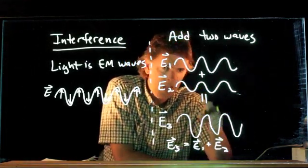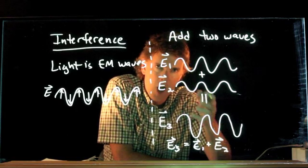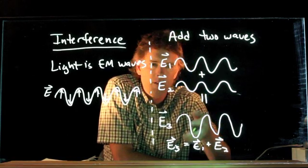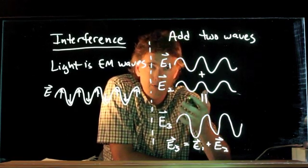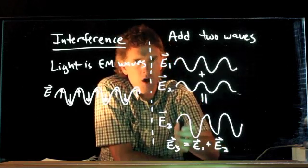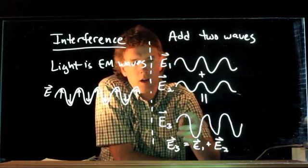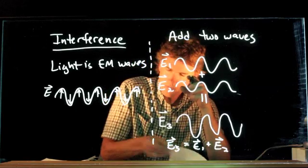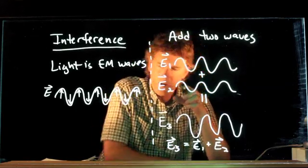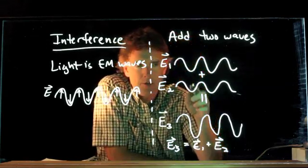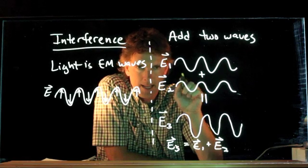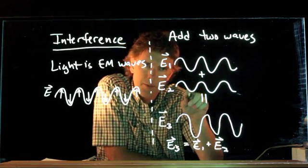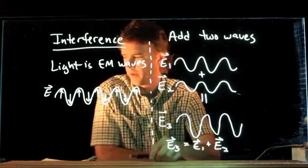In this case, what we've drawn is something called constructive interference. They have added constructively to give us a stronger electric field for E3. But we don't necessarily have to add two fields that look exactly identical. So let's see what happens if we change those fields a little bit.